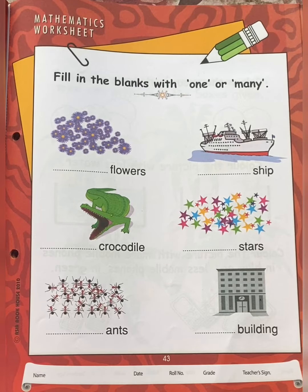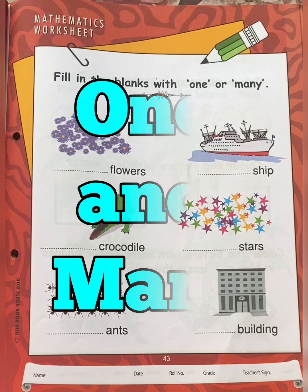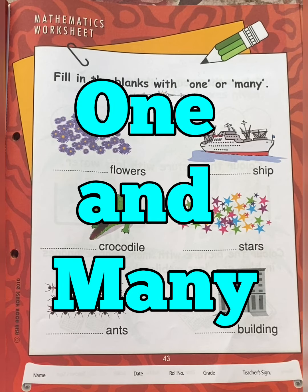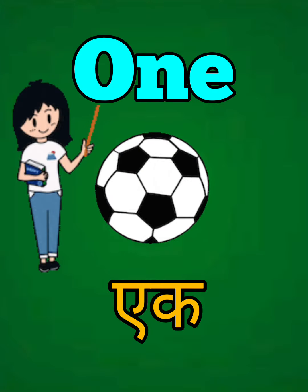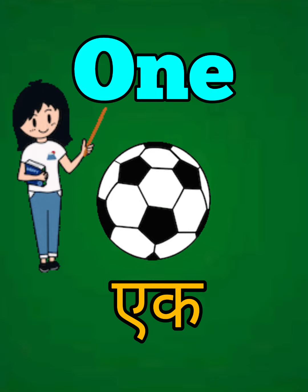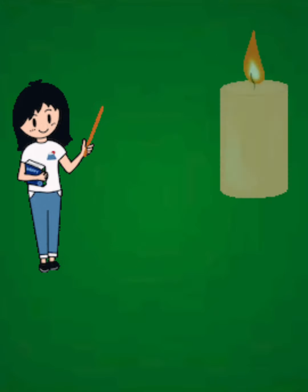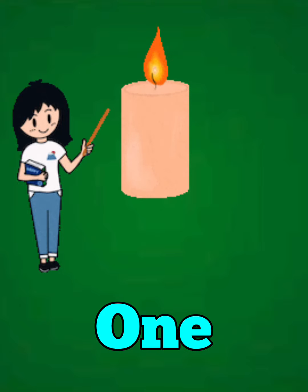Hello students, today in mathematics we are going to revise the concept of one and many. O-N-E, one means ek. When there is one thing, then it is called one.